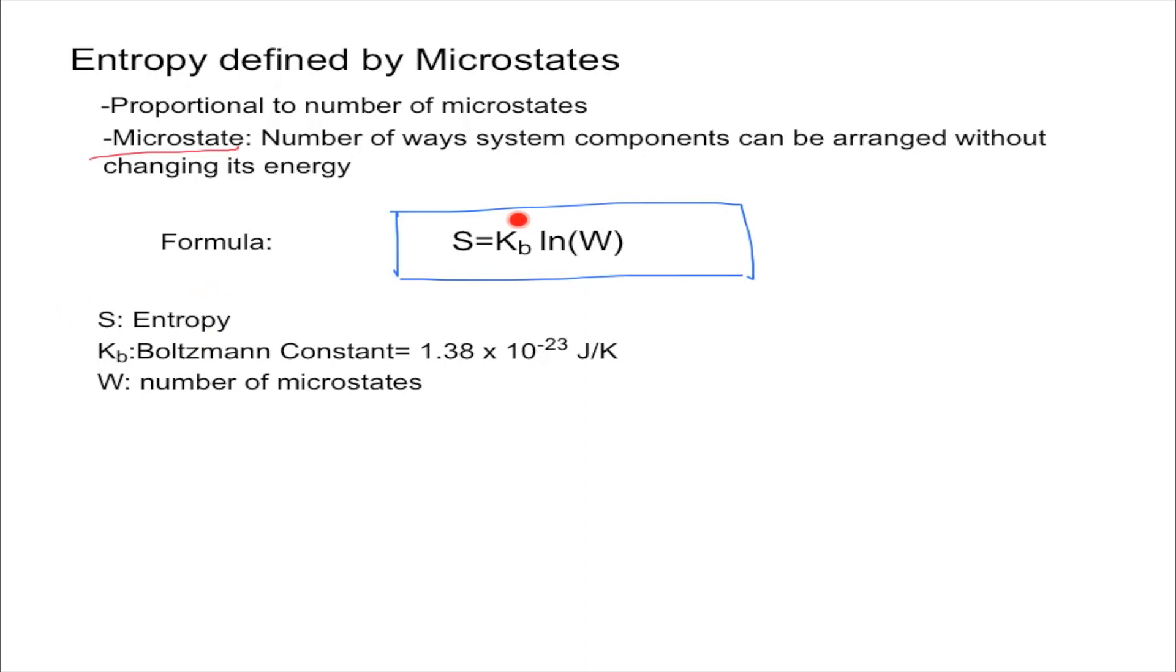kb is our constant and that's the Boltzmann constant, giving the name for this formula called the Boltzmann equation. That would be equal to 1.38 times 10 to the negative 23 joules over Kelvin, so that's a number to know. And finally W is just the number of microstates.